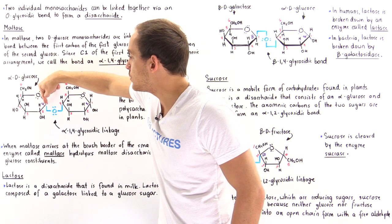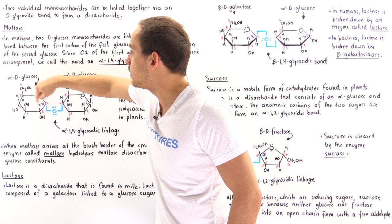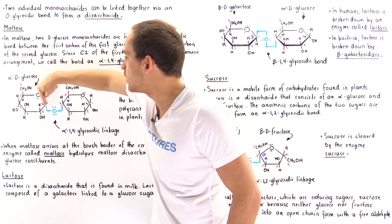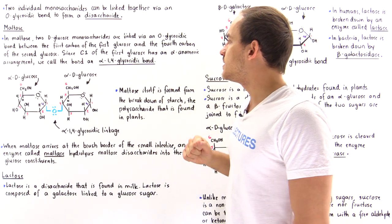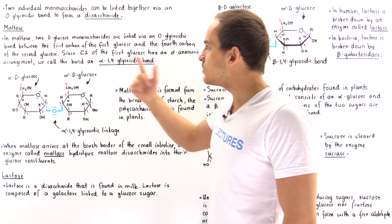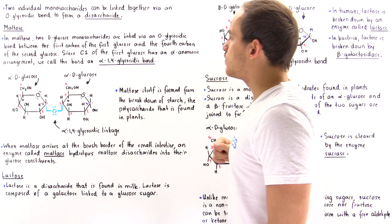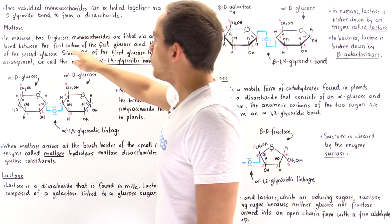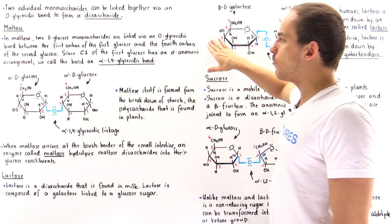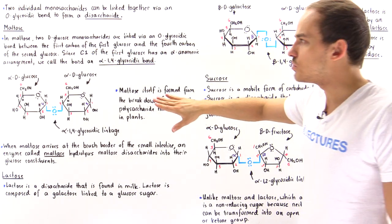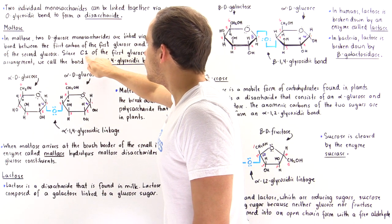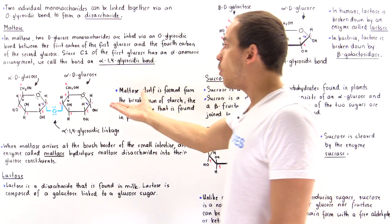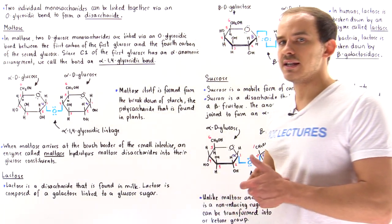Alpha designates the configuration of the first anomeric carbon of glucose number one, and 1,4 means we have a bond between carbon one of the first glucose and carbon four of the second glucose. So in maltose, two D-glucose monosaccharides are linked via an O-glycosidic bond between carbon one of the first glucose and carbon four of the second glucose. Since carbon one of the first glucose has the alpha-anomeric arrangement, we call this the alpha-1,4-glycosidic bond.